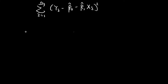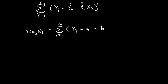Another way to understand this is that we can define a function. Let's call that function S, and it's a function in terms of A and B, where A and B are the two variables. This function is defined as the sum of (yi minus A minus B times xi) squared. We want to find the values of A and B such that this expression is minimized.